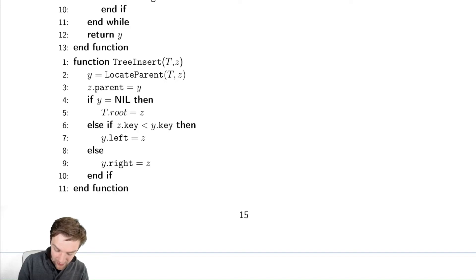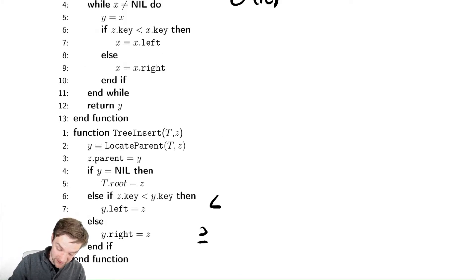Now if z was less than y then I'm going to need to set it to be y's left child and otherwise the right child. Notice this is our convention we are talking about. This is less than and then to the right is greater than or equal to. Let's go up to the code and see what I mean there.